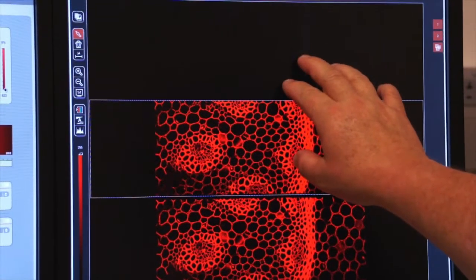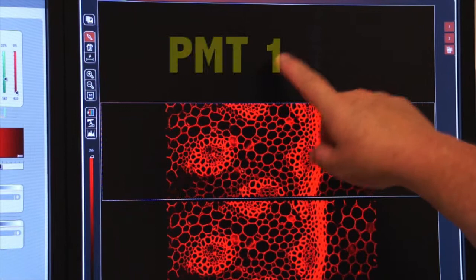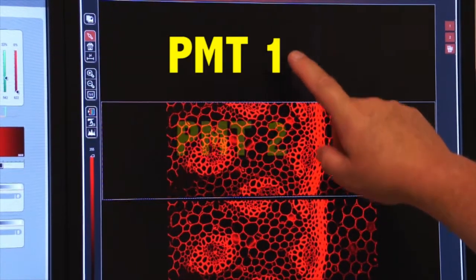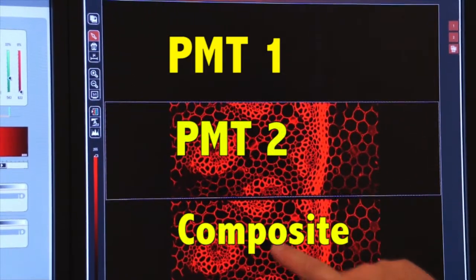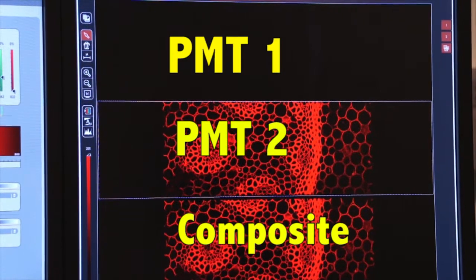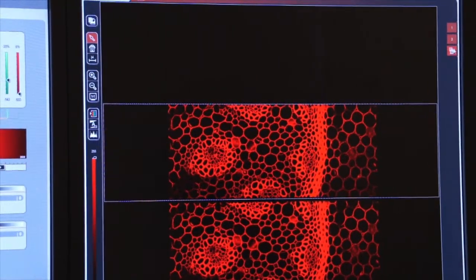I have two PMTs engaged, so the top window is PMT1, this is PMT2, and that's the composite. Let's turn off the composite image for a second, so you see two windows.